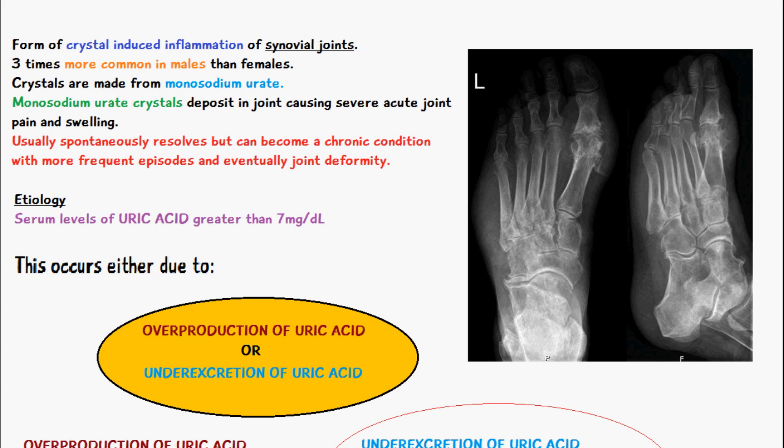Gout is usually spontaneously going to resolve itself, but it can eventually become a chronic condition with more frequent episodes of pain, and eventually it can result in joint deformity. You can see from the diagram on the right there is some joint deformity from gout, and this is a chronic case.